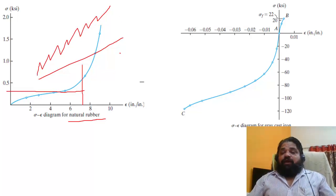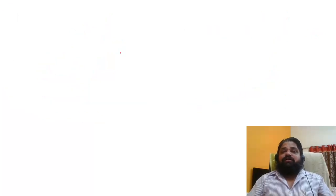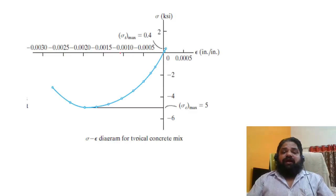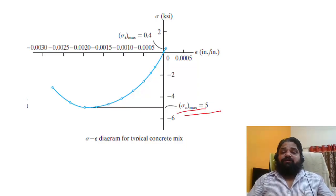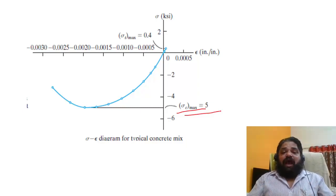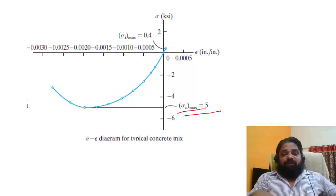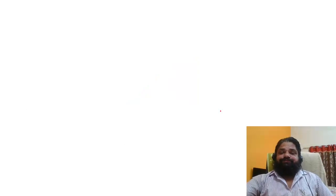One case of gray cast iron is shown, which has higher compressive strength as I said. A typical concrete mix is also shown — concrete has a higher sigma-c-max value. That is why foundations of any structure are made of concrete — it is good enough in compressive strength — and then steel rods are used outward.